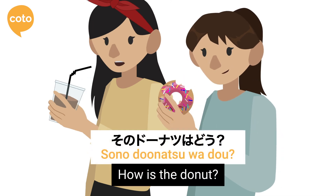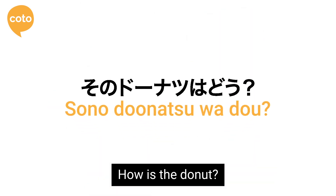Example sentence: 'Sono donatsu wa dou?' meaning 'How about those donuts?' or 'What do you think of those donuts?'